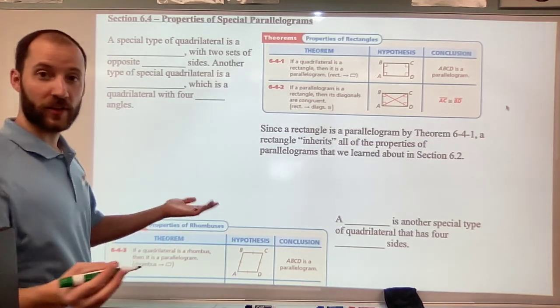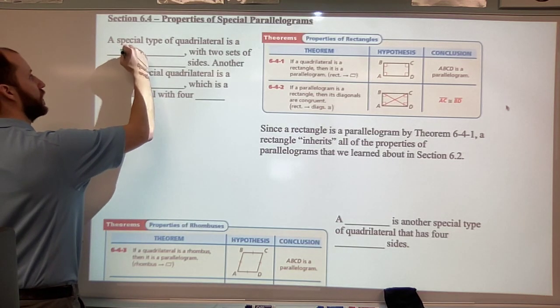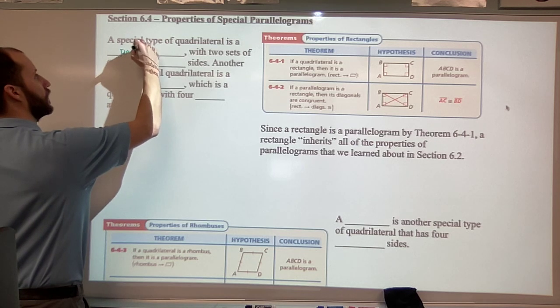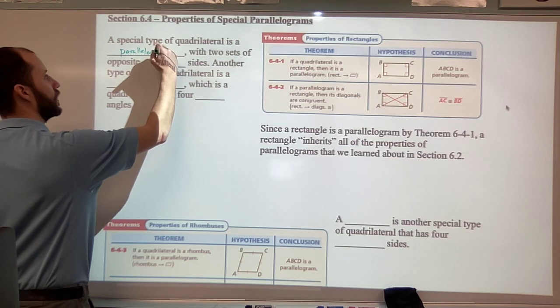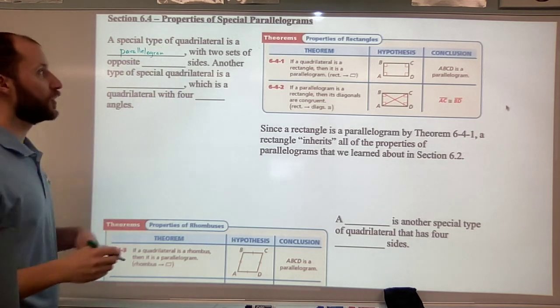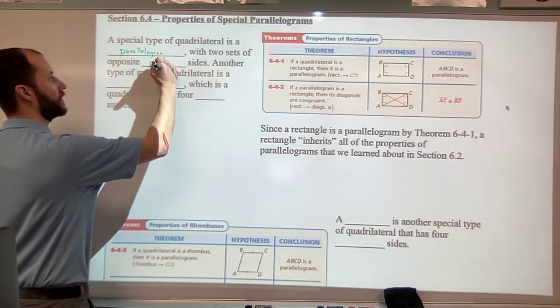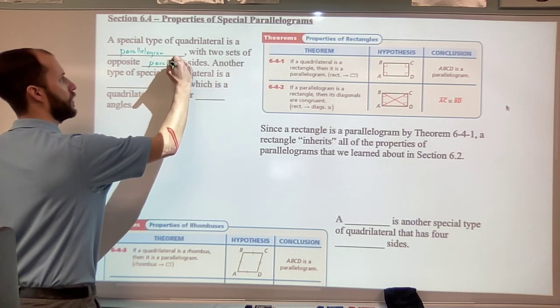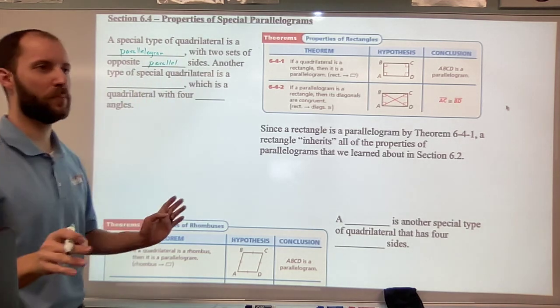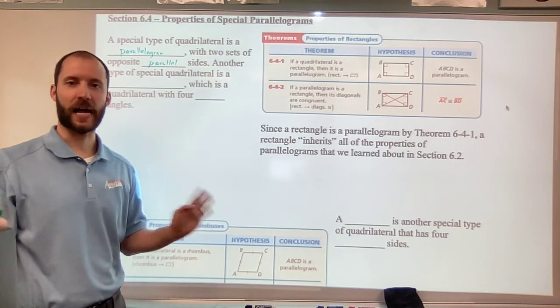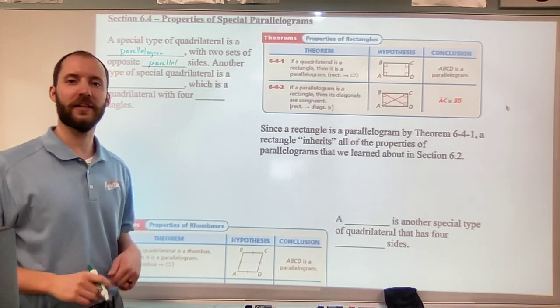So remember, a quadrilateral is a parallelogram - I'm going to spell that word out again, parallelogram - has two sets of opposite parallel sides. You know, once I figured out there's two L's, then one L, all of my problems in life vanished. I could spell parallelogram and I could impress people at parties.